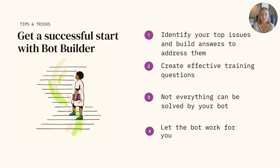When it comes to getting started, the first thing you're going to do is identify your top service issues. Ask yourself: which issues should I automate? What should I not automate, because it's super high touch, complex, or business critical? Let your bot handle repetitive questions to free your agents to focus on complex issues that require a human touch. The bot can escalate the conversation to the right agent when needed.